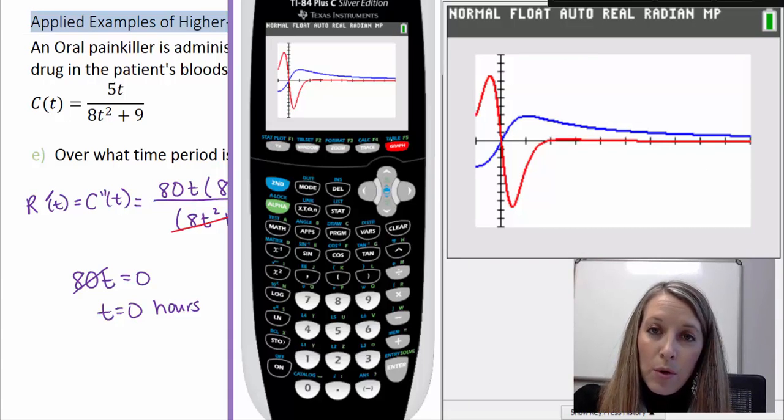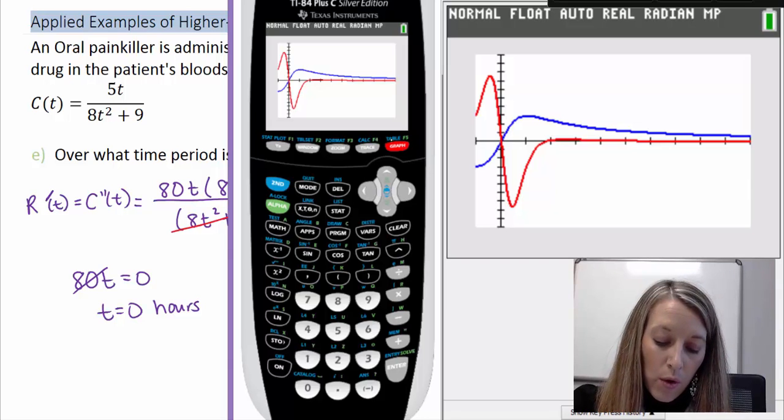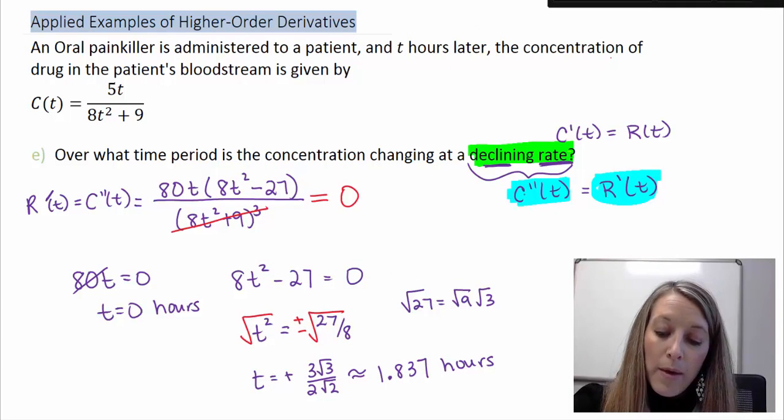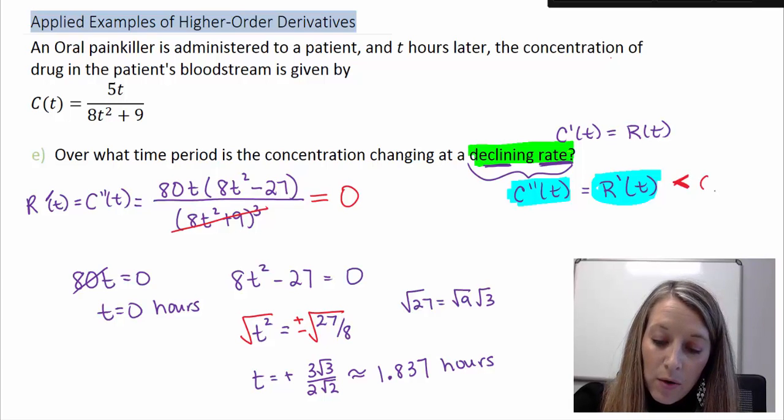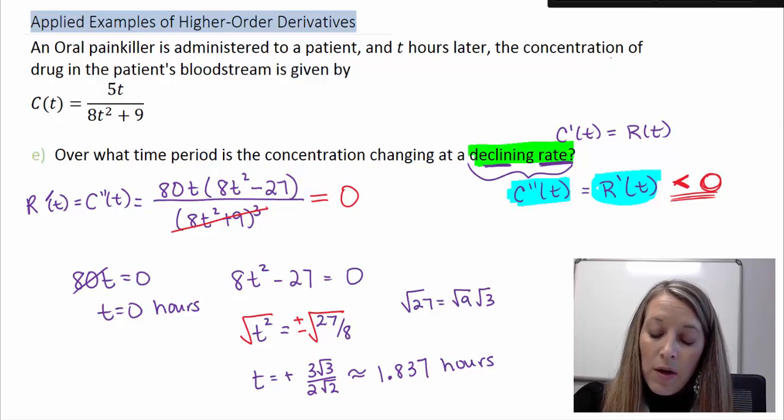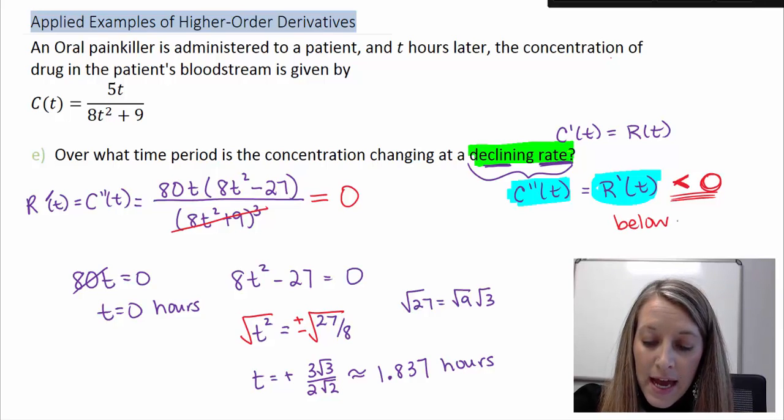So I have it here. Again, the blue is my original equation. The red is my second derivative equation. Well, if I want to know when my rate is declining, that means I want to know where my second derivative or my rate derivative is less than 0. We figured out where it's equal to 0 at, but now we need to specifically locate where it's less than 0. That means when it is below the x-axis.